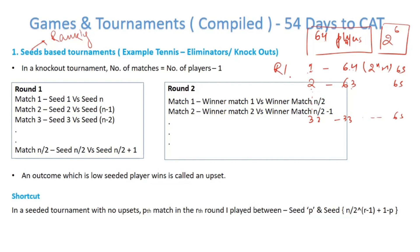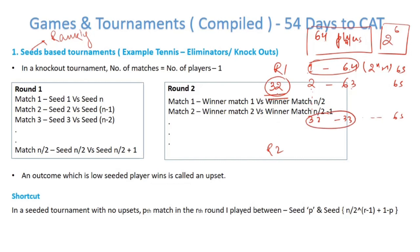In round 1, there are 32 matches, so 32 players are eliminated. In round 2, there are 32 players remaining. Match 1 of round 2 is played between the winner of match 1 (seeds 1 and 64) and the winner of match 32 (seeds 32 and 33). So in round 1 there were 32 matches, in round 2 there will be 16 matches, and so on.